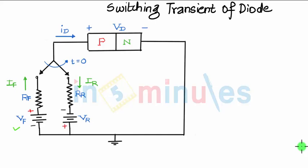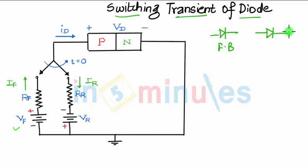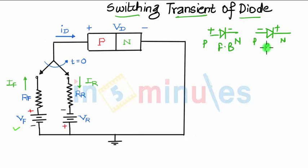Welcome to 'In Five Minutes.' Our topic of discussion is the switching transient of a diode. Switching transient of a diode means you are switching the diode from forward bias mode into reverse bias mode — that is, the P terminal connected to positive and N terminal connected to negative, then instantly reversed — and how the diode characteristics behave when you are making that change.